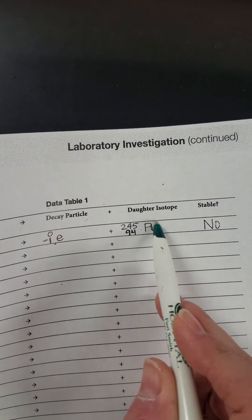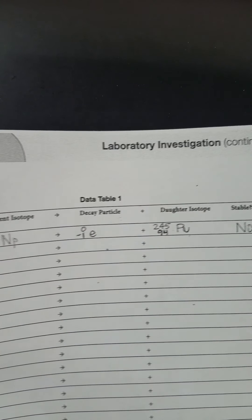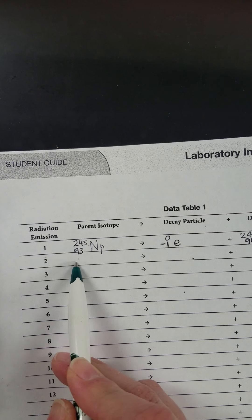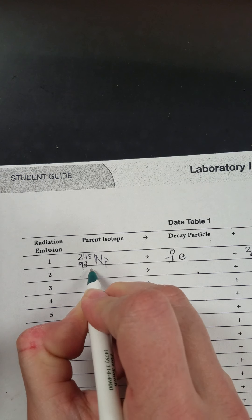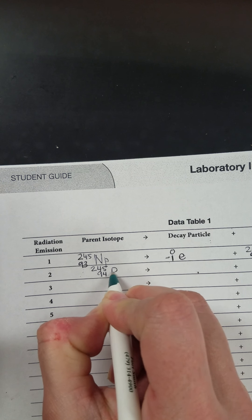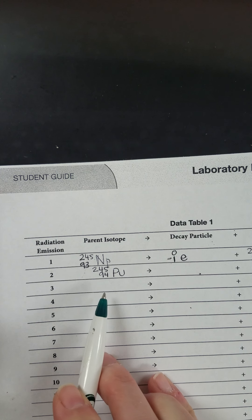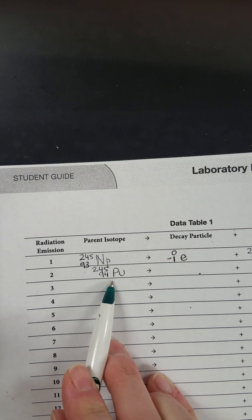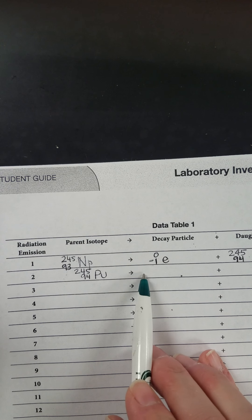And my daughter isotope that I've come up with now is going to become my parent isotope on row two. So I'm going to transfer my plutonium down here to become now my parent isotope. And then I'll draw another card.